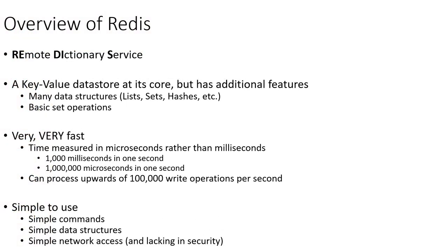Redis stands for Remote Dictionary Service, and it is a database about looking up some value based on some key — just like a dictionary, where you look up the definition of a word based on knowing what that word is. So you have a key (the word) and a value (the definition).